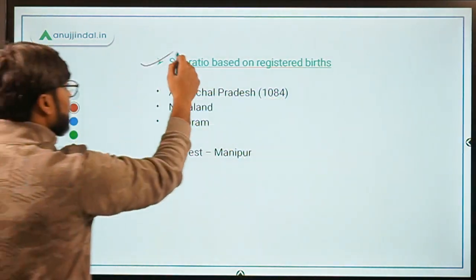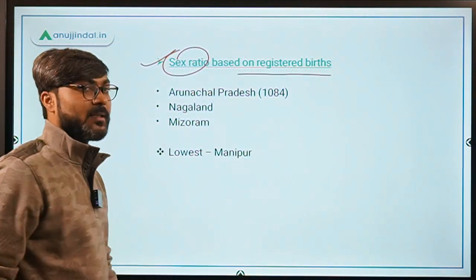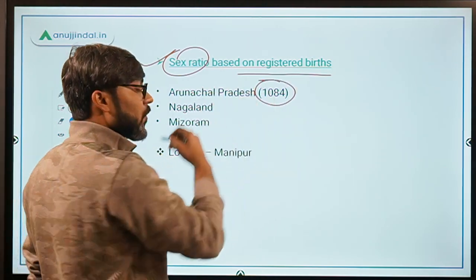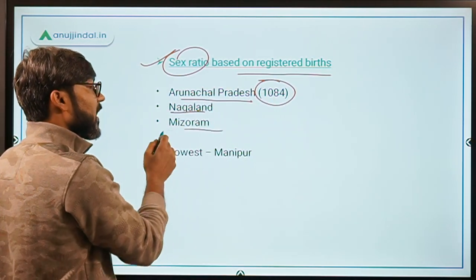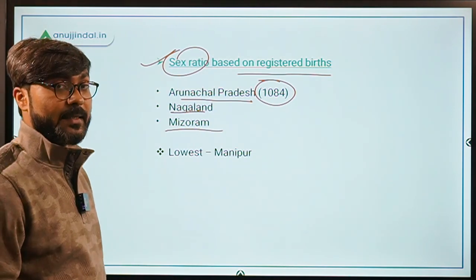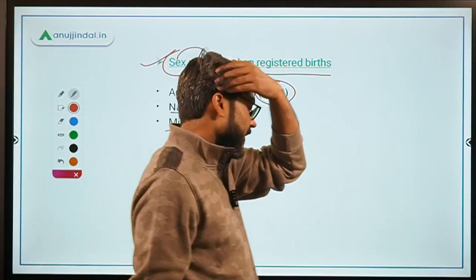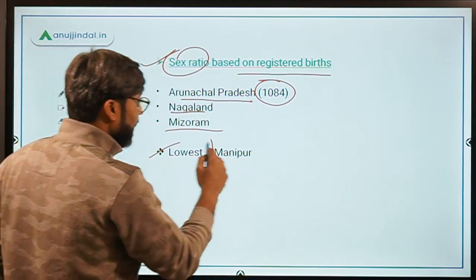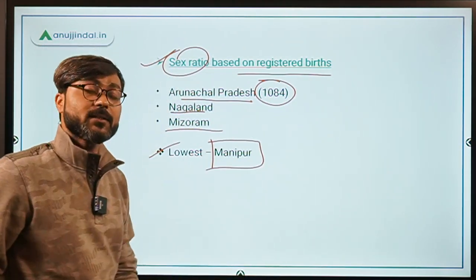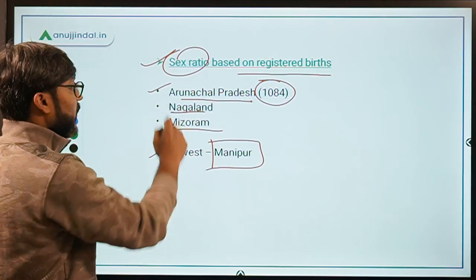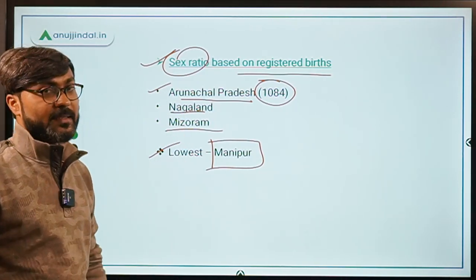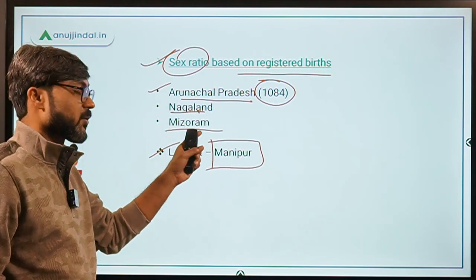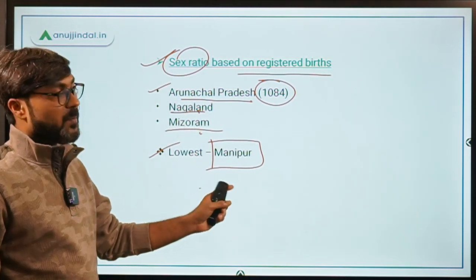Regarding sex ratio based on registered births: Arunachal Pradesh is number one with a sex ratio of 1,084. Then we have Nagaland and Mizoram — so the North Eastern states are performing well in sex ratio. The lowest is also a North Eastern state — Manipur. Arunachal Pradesh is at number one, followed by Nagaland and Mizoram, with Manipur at the lowest.